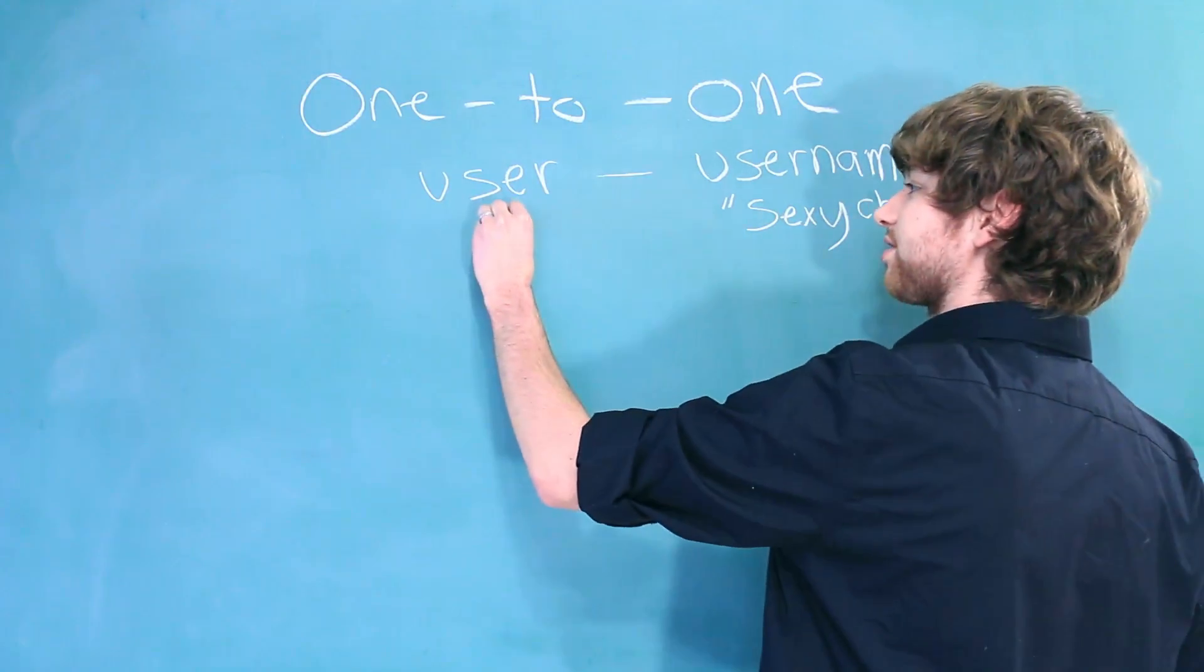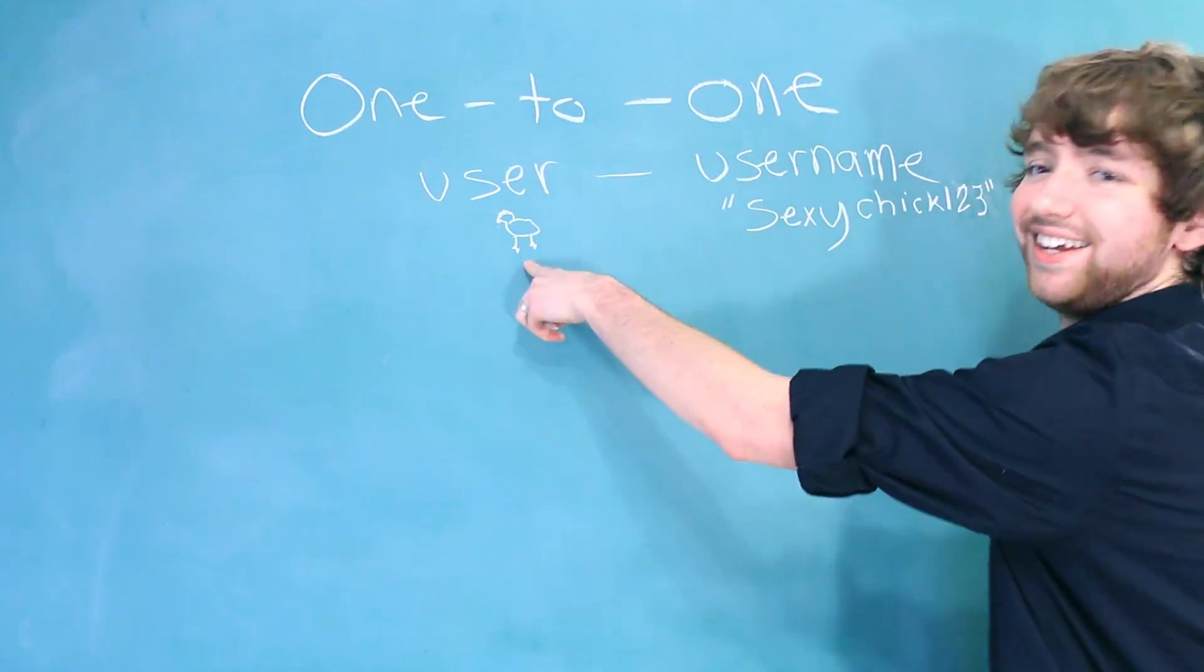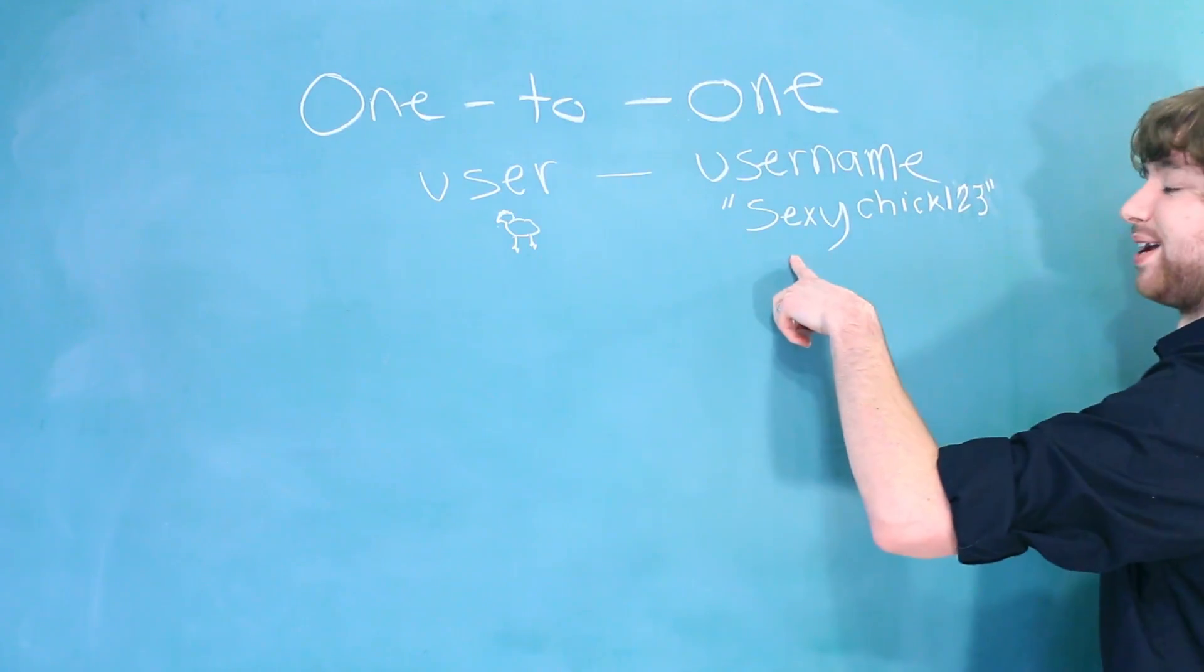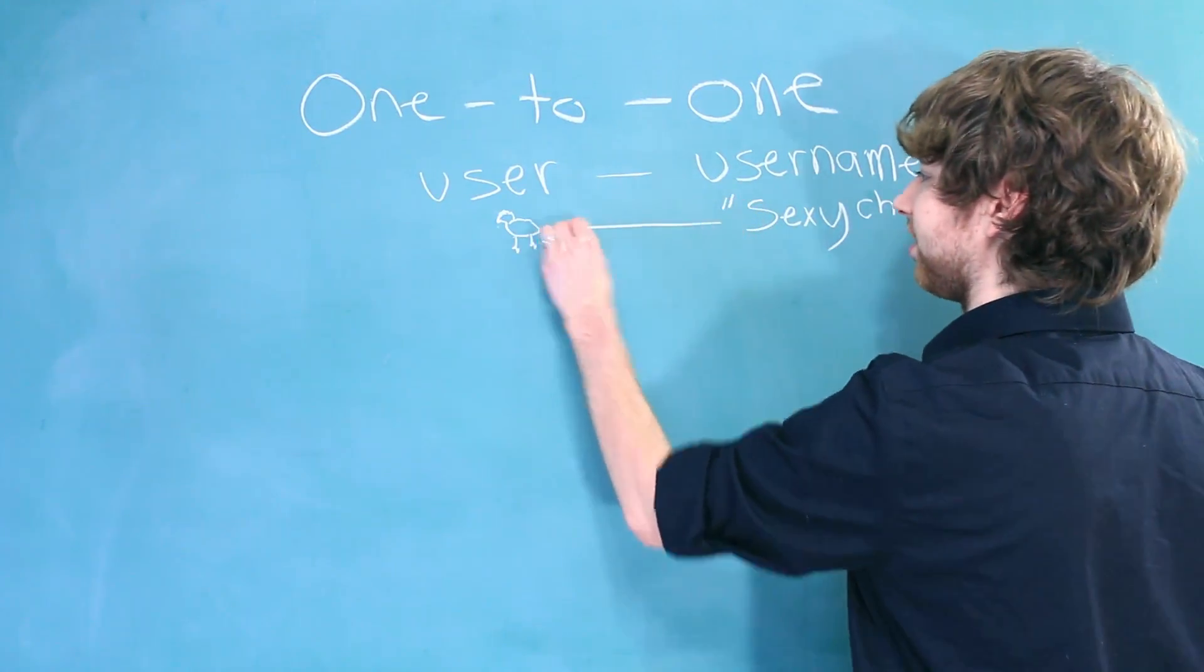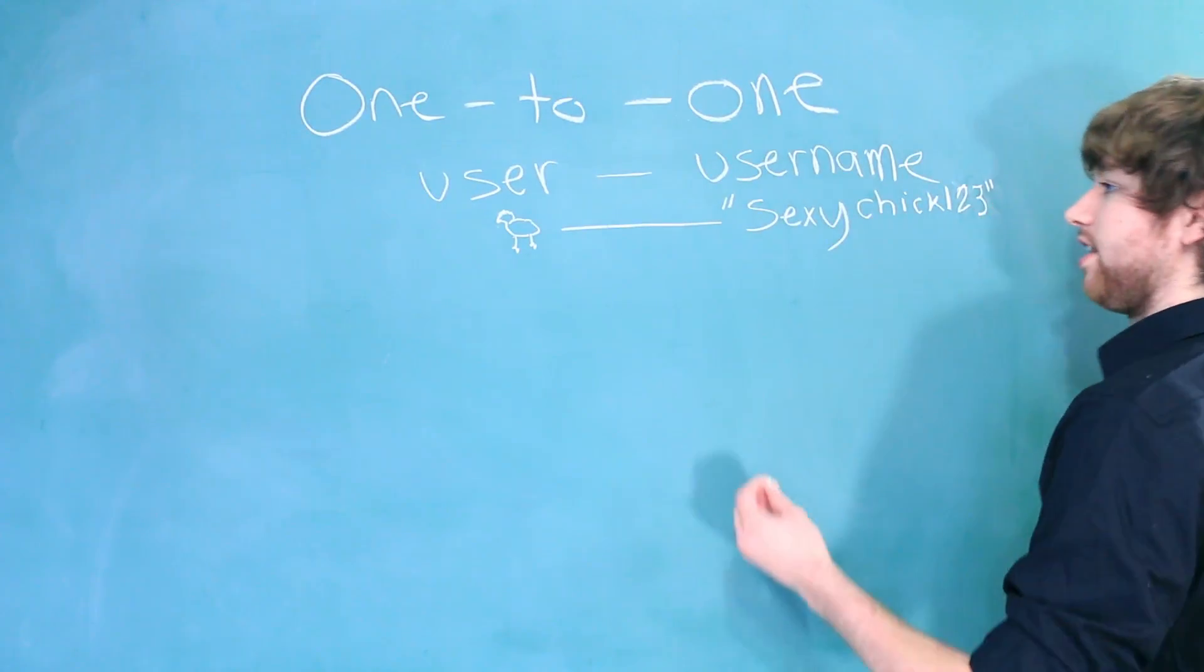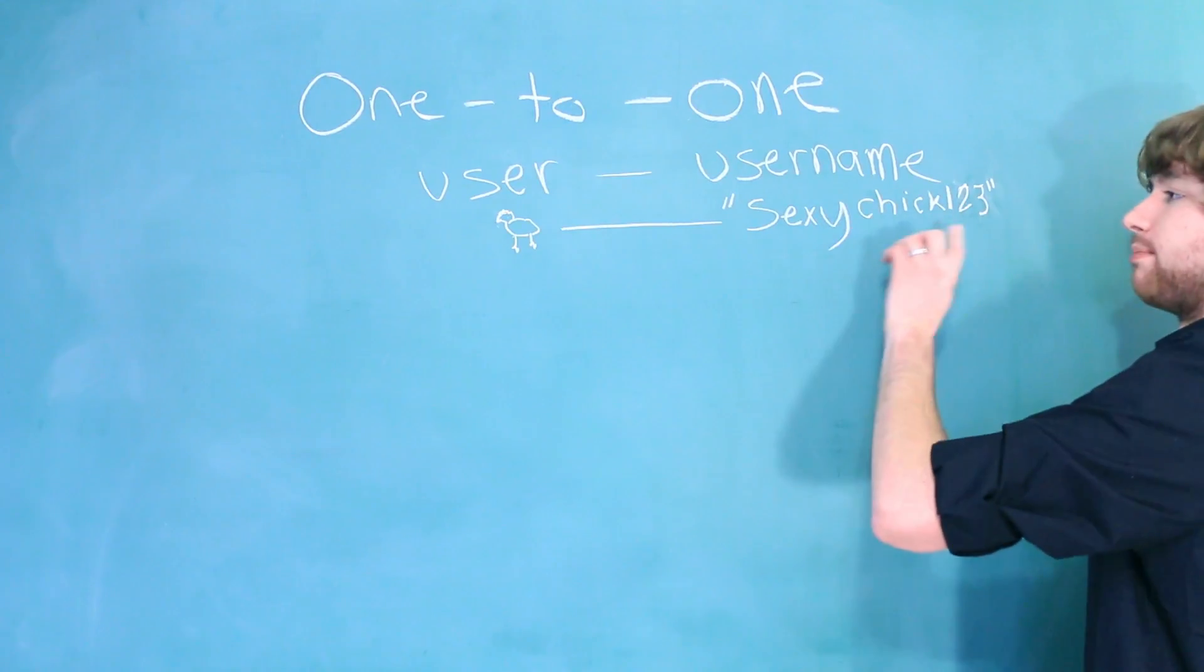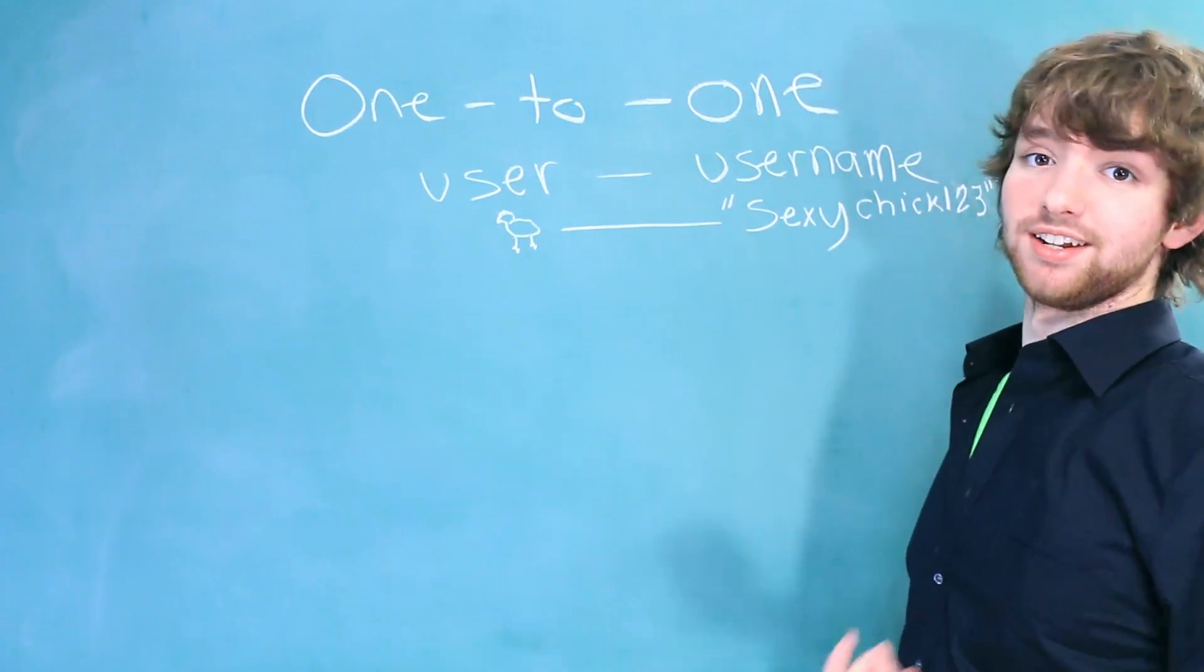And then this, I can't draw a chicken. This is the chicken that this username is referring to. There is a level of exclusivity here, in that this chick doesn't have two usernames, and this username does not have two chicks that it's describing.